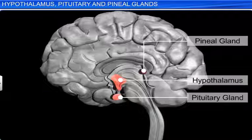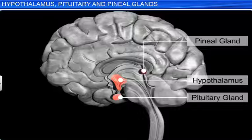The endocrine glands of the brain are very crucial in regulating mood, growth and development, metabolism, sexual functions, and reproductive processes in the human body.